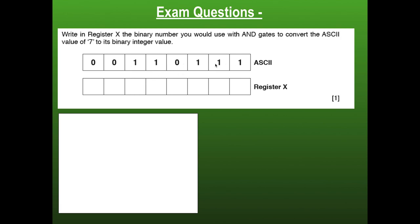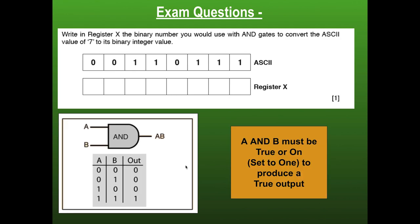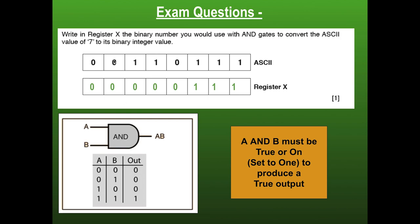We don't want the upper bits because the binary value of the full number was 55. We just want to get rid of those and only have the 7. An AND gate produces a true output when both inputs are 1. If both inputs are not 1, we will not get a true output. So we want to make this register have values that will produce either true or false: make all the upper bits come out false and all the lower bits come out true. For the bits you want to be true, there needs to be a 1 in register X. For the bits you want to be false, you need zeros in register X. So register X would be 00001111 — zeros for the upper nibble, ones for the lower nibble.